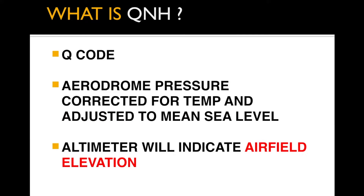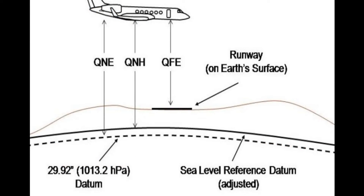Coming on to QNH — QNH is a Q code which is basically aerodrome pressure corrected for temperature and adjusted to mean sea level. So whenever you are going to set QNH on your altimeter, it's going to read the airfield elevation. We'll explain this with the help of a very simple diagram.